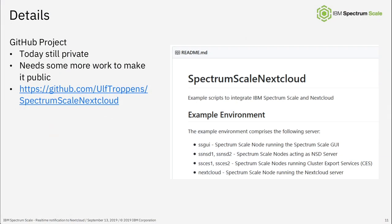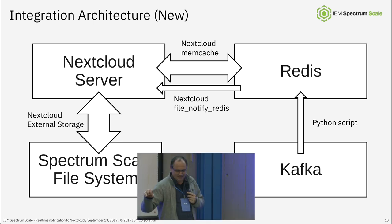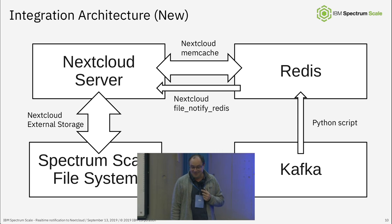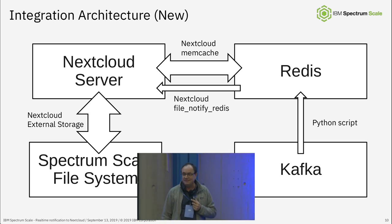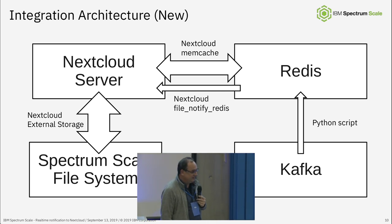There's a GitHub project with Ansible scripts to document this end-to-end — still private because my colleague has it running but it's not yet working on my system. I can see the events appearing in Redis, and the Nextcloud agent is pulling and removing entries, but I don't yet see the updates in the view. Once that's fixed the project will go public so you can see how it's integrated end-to-end.